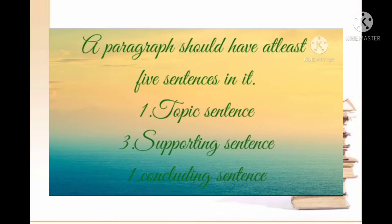A paragraph should have at least five sentences in it. The first sentence is the topic sentence, then three supporting sentences, and the last sentence is the concluding sentence. In the topic sentence, we mention the topic of the paragraph. The three supportive sentences are added to describe that topic sentence. Then the concluding sentence sums up that particular paragraph. All three parts are very important for a paragraph.